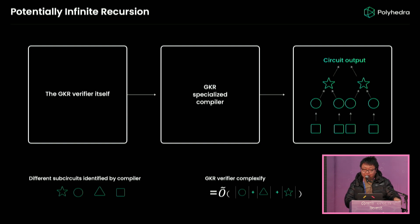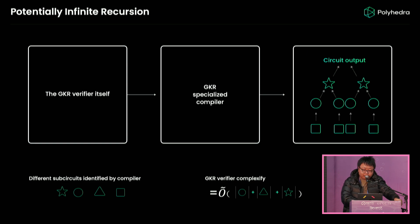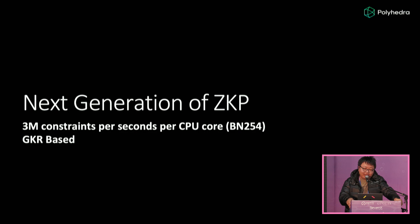This new compiler could potentially enable recursive SNARKs, because the verifier circuit is orders of magnitude smaller, so we can directly recurse on this verifier and make everything infinitely recursive. Now let's talk about the prover part. We also have a state-of-the-art GKR-based prover that can operate at more than 3 million constraints per second on a single CPU with BN254.